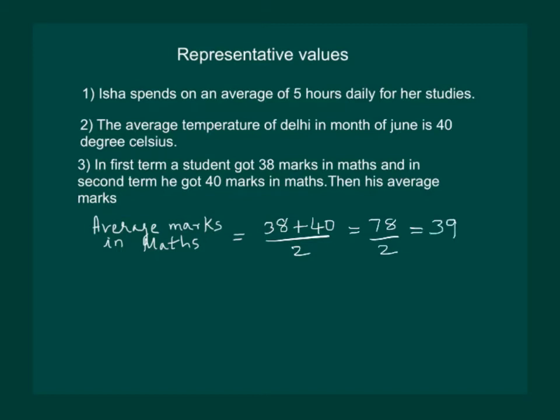This equals (38 + 40) divided by 2, which is 78 divided by 2, which equals 39. So the average marks in maths are 39, but actually he got fewer marks in the first term than the average and more marks in the second term than the average.